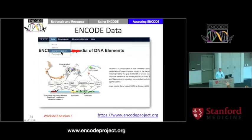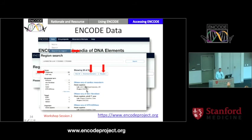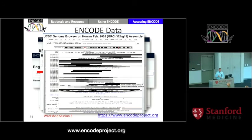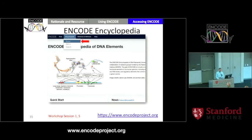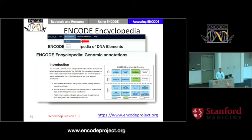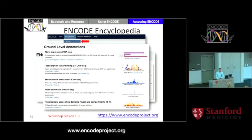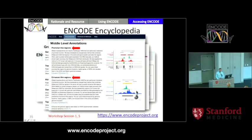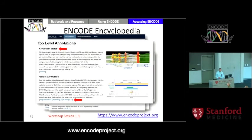New to the ENCODE portal is the search by region feature. You can put in a genomic coordinate or SNP ID, find ENCODE data that overlaps with that region, and visualize it — a quick way to see tracks or download elements. There's also an ENCODE encyclopedia, which will be the focus of workshop one. It has high-level and close-to-the-data analyses. Ground-level annotations are things like where transcription factors are bound. Middle-level annotations put data together to find promoters and enhancers. Top-level annotations put together many different types of data to generate inferences — you'll hear about that especially in workshop five.